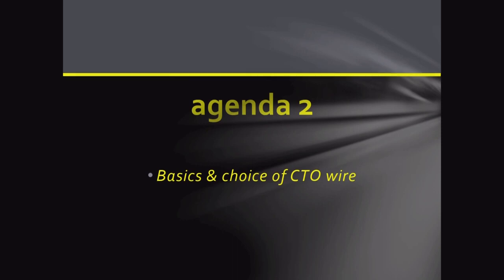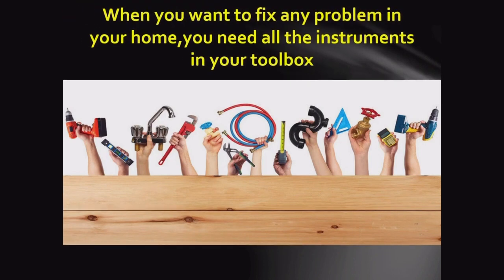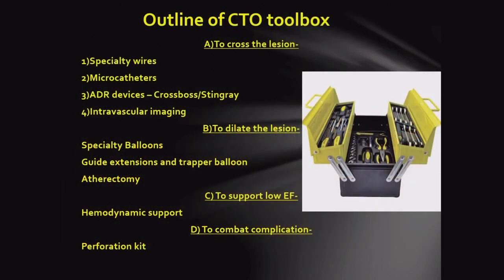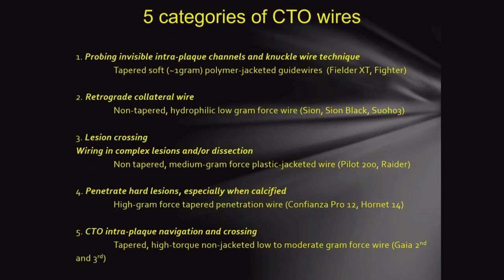Now agenda 2: basics and choice of CTO guidewire. Like having all instruments in your toolbox when fixing a problem at home, for CTO you need all the right tools — the most important being the wires. CTO wires can be divided into five categories: one, probing invisible intraplaque channels and knuckling — tapered soft polymer-coated wires like Fielder XTR, XT, or Fighter; two, retrograde collateral wires — Sion, Sion Black, Suoh; three, lesion crossing in complex lesions or dissection — Pilot 200, Radar; four, penetrating hard cap with high-force wires like Confianza Pro 12/40; five, CTO intraplaque navigation when you know the course of the CTO — Gaia Second, Gaia Third.